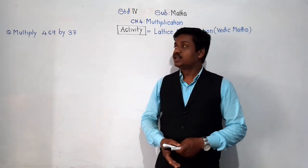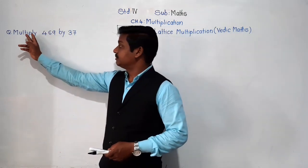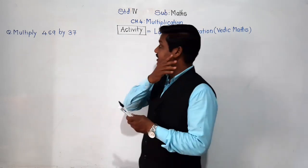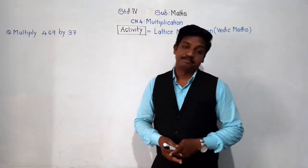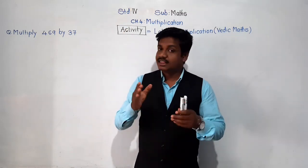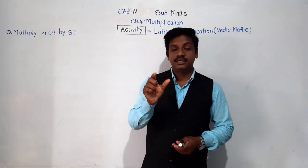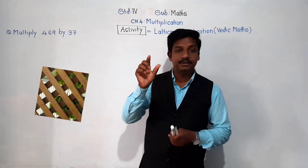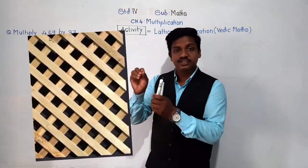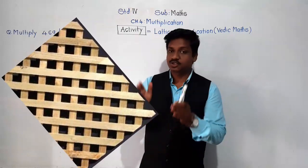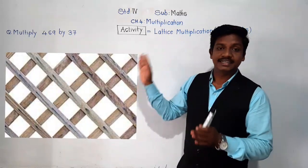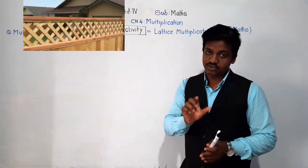We are going to learn how to multiply using the lattice method through this activity. One example I have written here: multiply 469 by 37. Before that, let me tell you what 'lattice' means. Lattice refers to wooden strips arranged in the form of a square or diamond. So lattice means strips — we are going to use strips here.